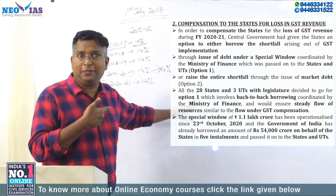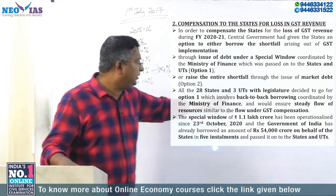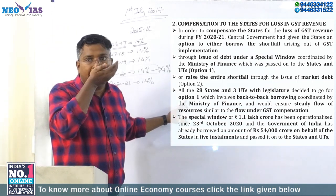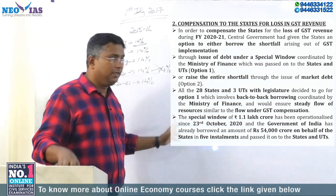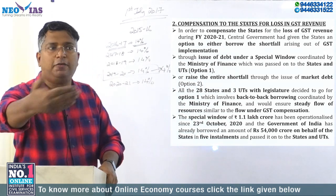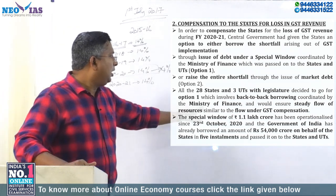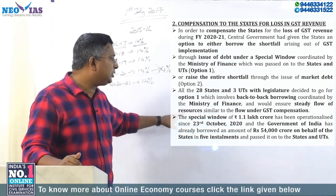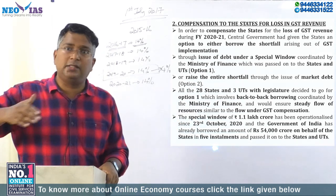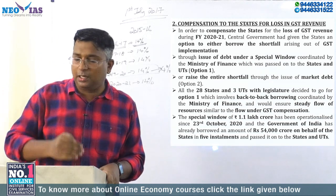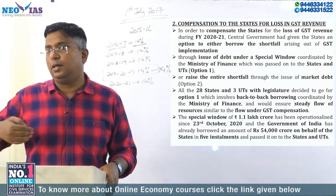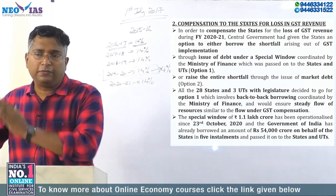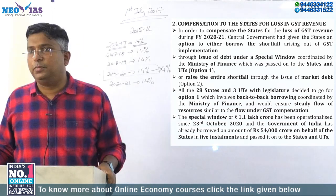As per the Economic Survey data, all 28 states and 3 union territories with legislature decided to go for back-to-back borrowing. Depending upon the requirement, the center will borrow and give it to the state — center borrows, gives to the state — coordinated by the Ministry of Finance. It will ensure a steady flow of resources similar to how GST compensation was provided earlier. The center will transfer the compensation on a regular basis, not as a full lump sum.